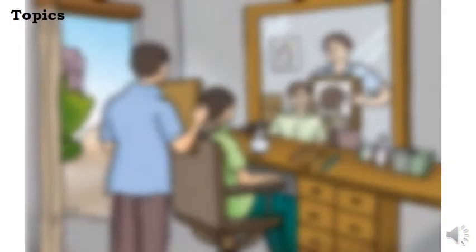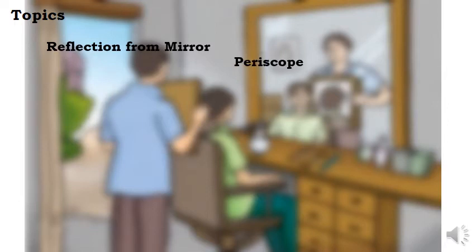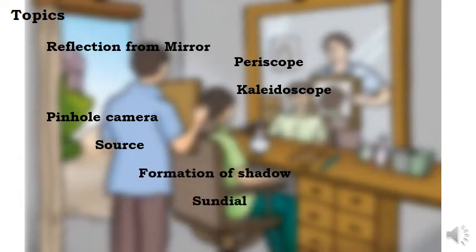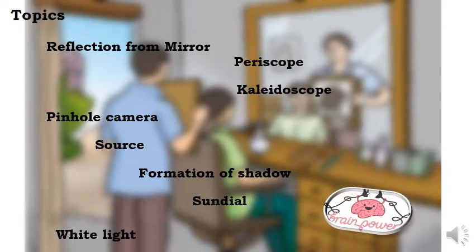Let us see the topics which we are going to cover in this part. Reflection from Mirror, Periscope, Kaleidoscope, you are going to make even Pinhole Camera. Then we are going to see the Source of Light, Formation of Shadow, then we are going to make Sundial also. Then White Light, the concept of White Light. Then you are going to use your Brain Power.